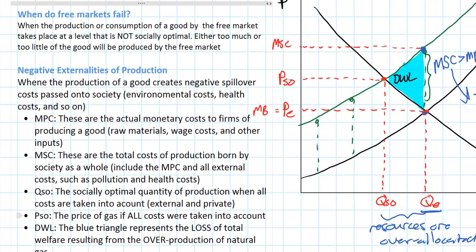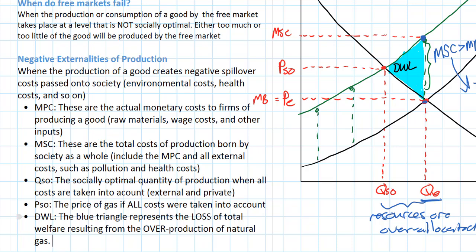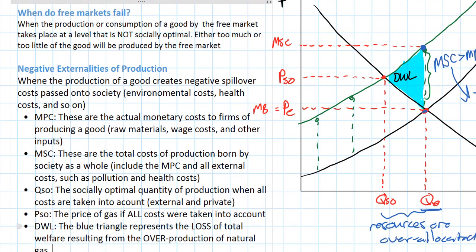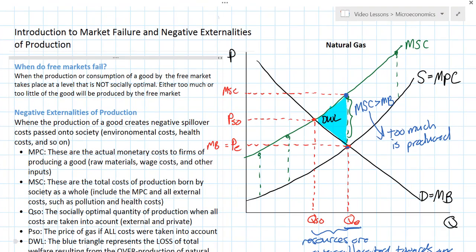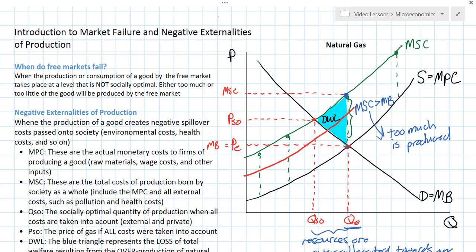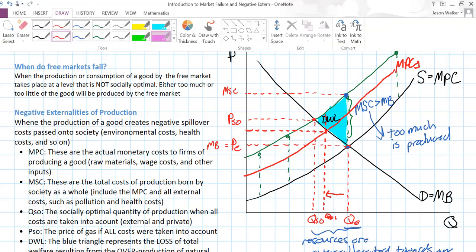If producers of gas were somehow forced to bear the external costs — the environmental costs — to pay for the proper elimination of their waste rather than dumping pollutants into the soil and atmosphere, then their private costs would be higher and the equilibrium quantity of natural gas produced would be lower. If gas producers were made to pay higher costs, the marginal private cost would increase — call this MPC1 — leading to a lower equilibrium quantity. In this illustration, there is still some negative externality and some deadweight loss remaining.